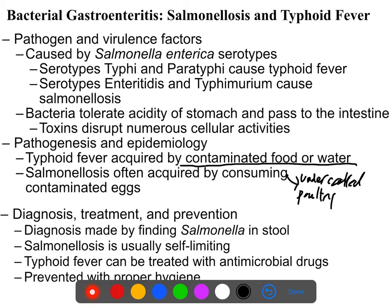The level of bacterial contamination of eggs is relatively low, but if you are young, old, or immunocompromised you should avoid anything that might contain raw eggs. Typhoid fever is more serious and more frequently deadly; it is usually treated with antimicrobial drugs.